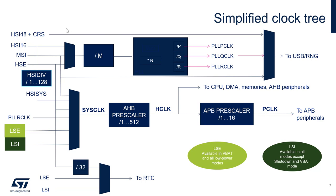Starting from the top of the clock tree: HSI48 is our 48 MHz source. You can use it with the CRS — the Clock Recovery System — to have USB running. The USB is what we call crystal-less: if you use HSI48 plus CRS, you can have a USB application running without needing an external crystal.